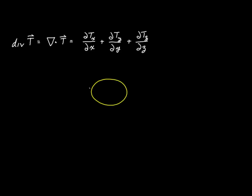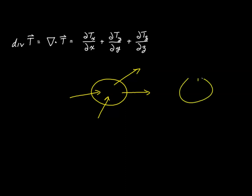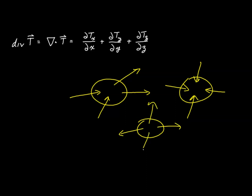If we have a small space and we have vector quantities that are passing into the space and out of the space, then the question is: what is the net result? How does the inflow compare to the outflow? If there's more flowing into the space than flowing out, the divergence is negative and we'd refer to the area as a sink. If something is flowing out, then the divergence is positive and we'd say that it's a source.